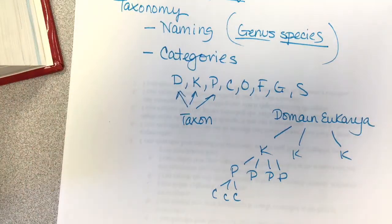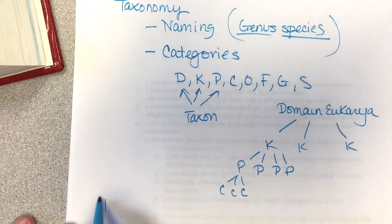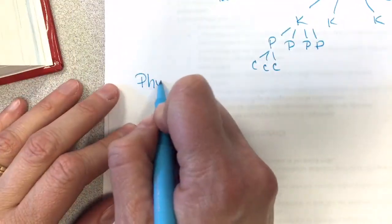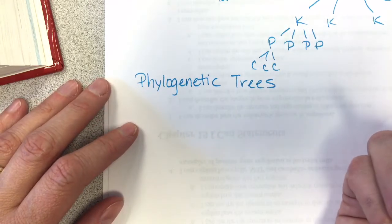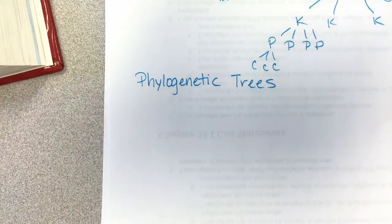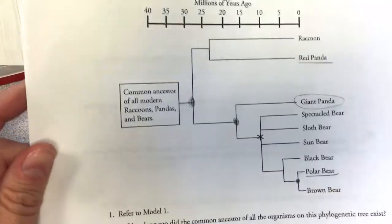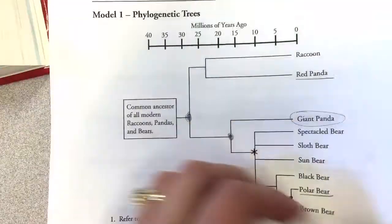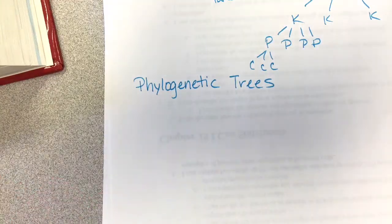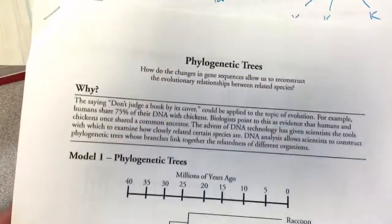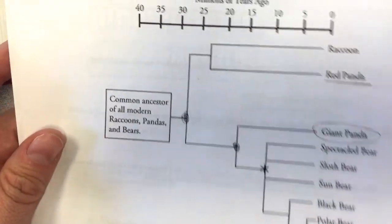We look at the relatedness of organisms and put them into a phylogenetic tree. We need to know the basic overview of what a phylogenetic tree shows — interpreting trees, which we went over in class with that activity. Being able to interpret and understand what these different features mean.